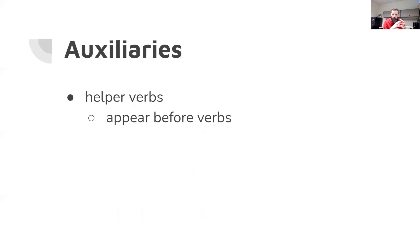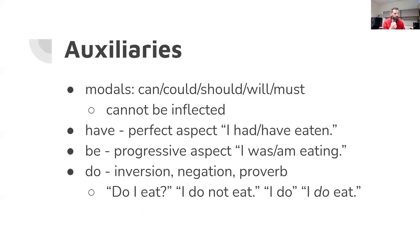The next category is auxiliaries — primarily helper verbs. They appear before verbs but don't contain the main meaning of the verb; they help the verb by telling us about the mood, tense, or aspect. We have modals as one category: words like can, should, will, must, may, and might. Modals cannot be inflected — we don't change them depending on whether they're past tense or third person. We'll talk more about them later.